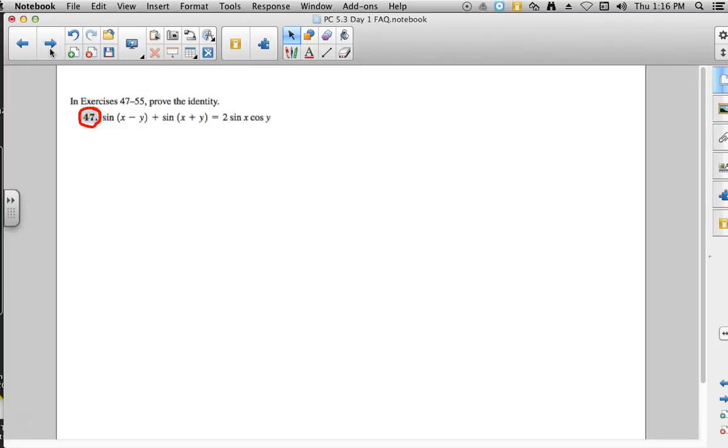Number 47 is similar. And what we're going to do is we're going to start with the left-hand side. And we're going to use the formulas for the sum and difference of the sine function in order to figure out what we have left. So sine, cosine, cosine, sine. And that is the pattern for the sine function for the sum and the difference.